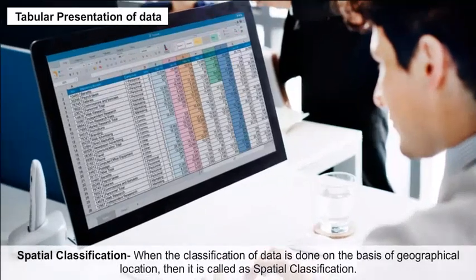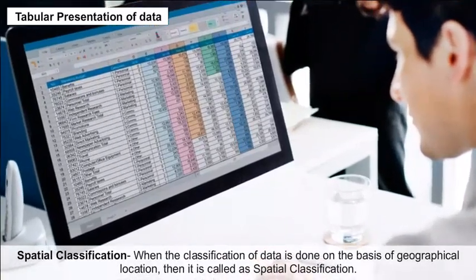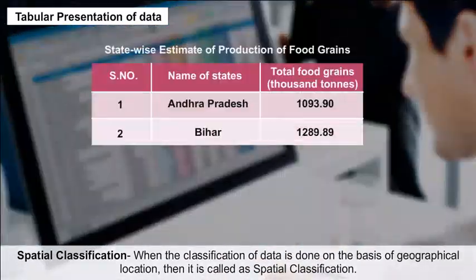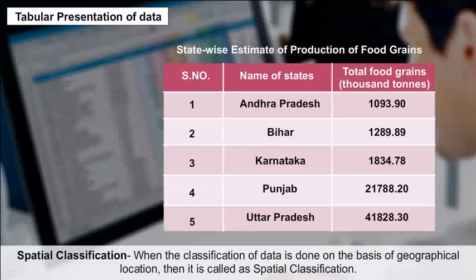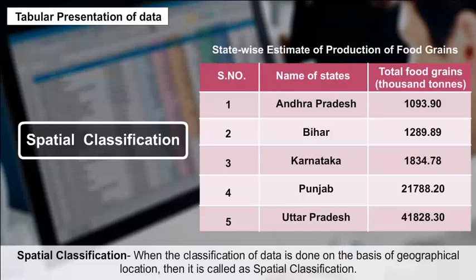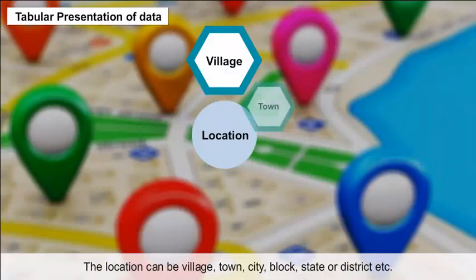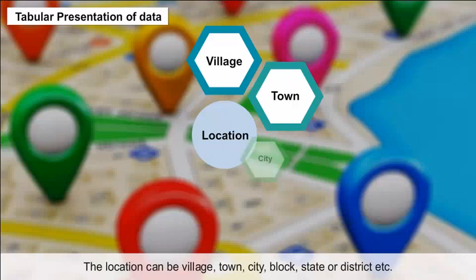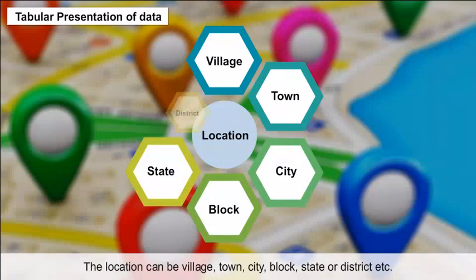Spatial Classification: When the classification of data is done on the basis of geographical location, it is called spatial classification. The location can be a village, town, city, block, state, or district, etc.